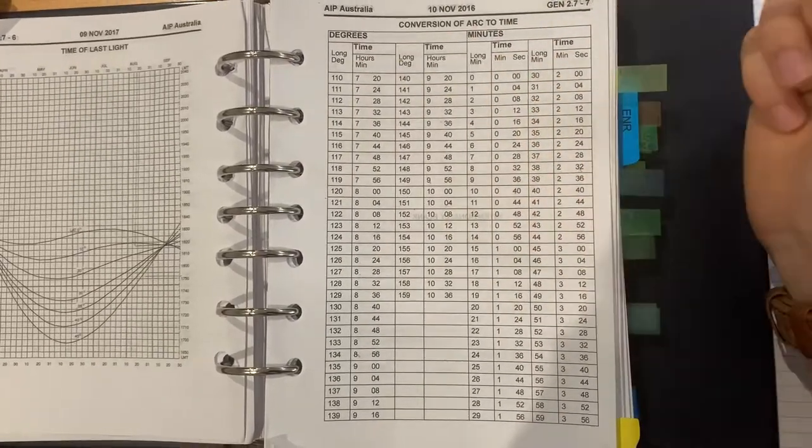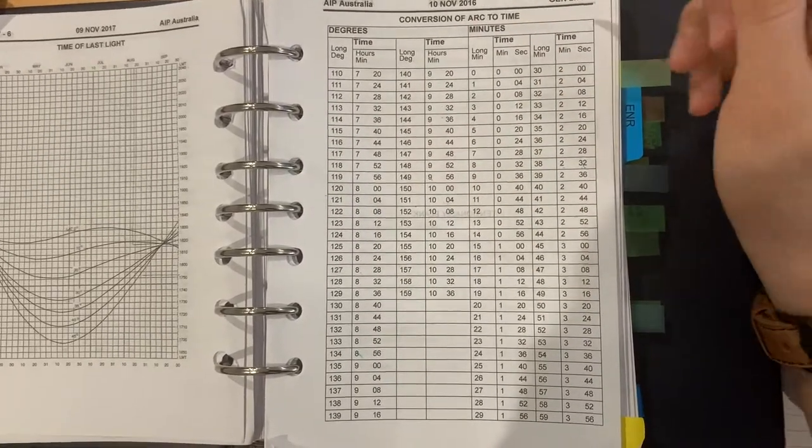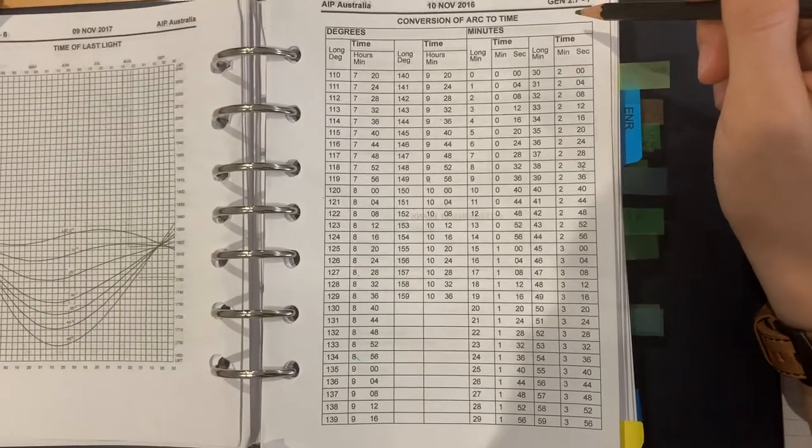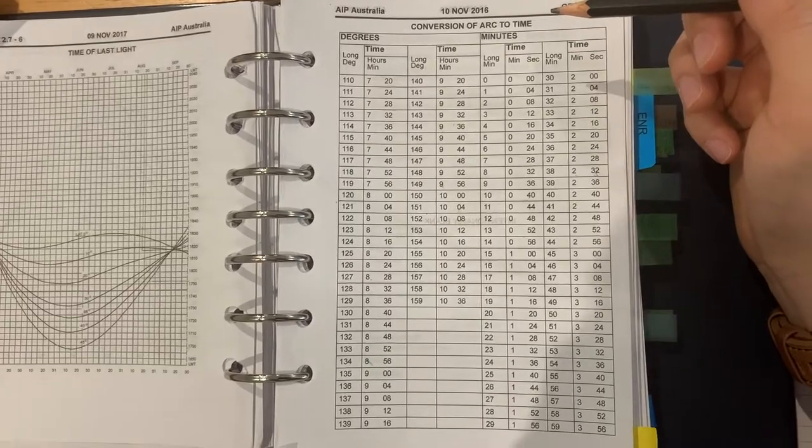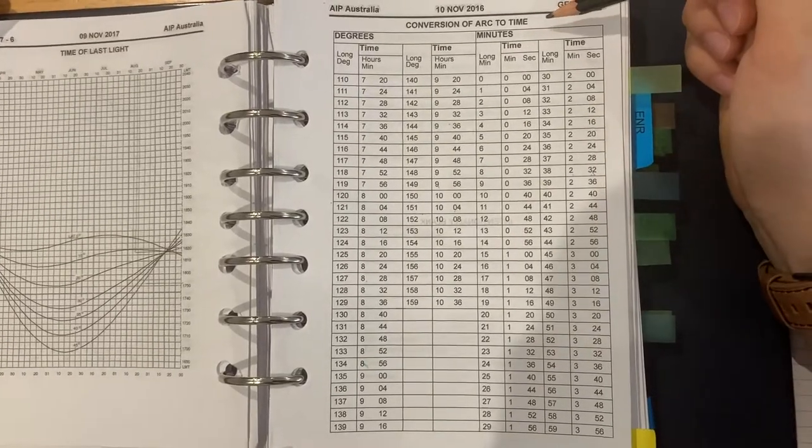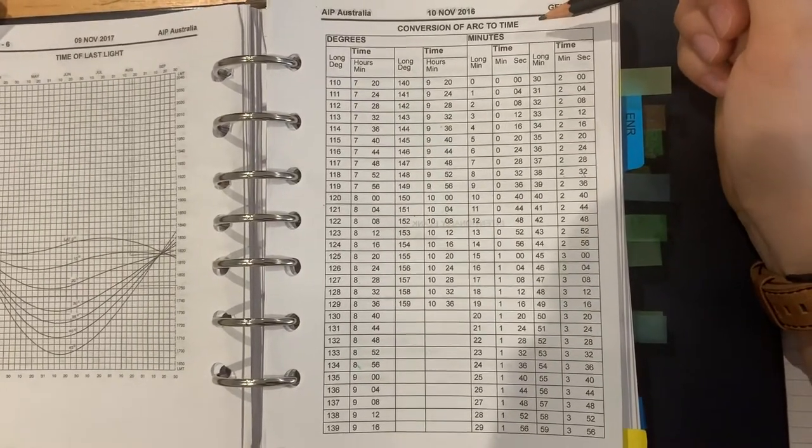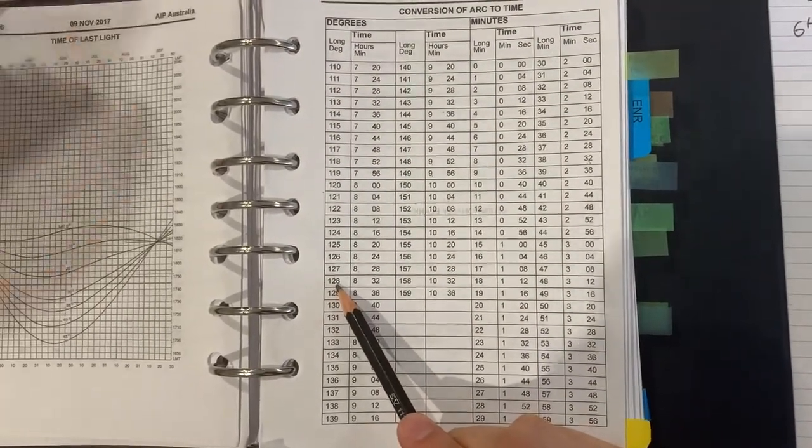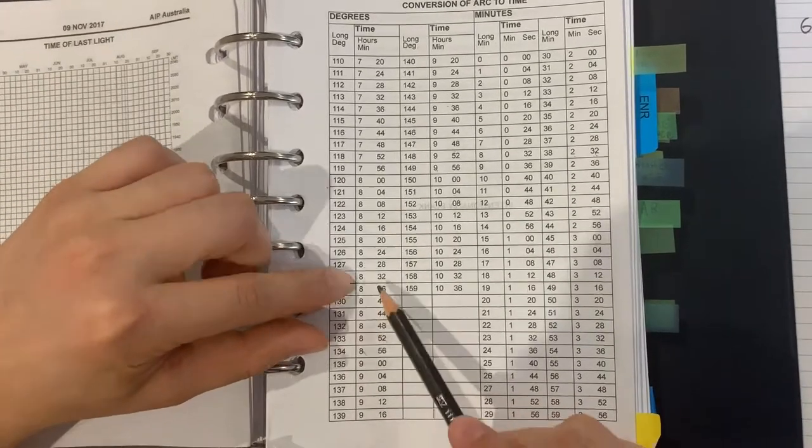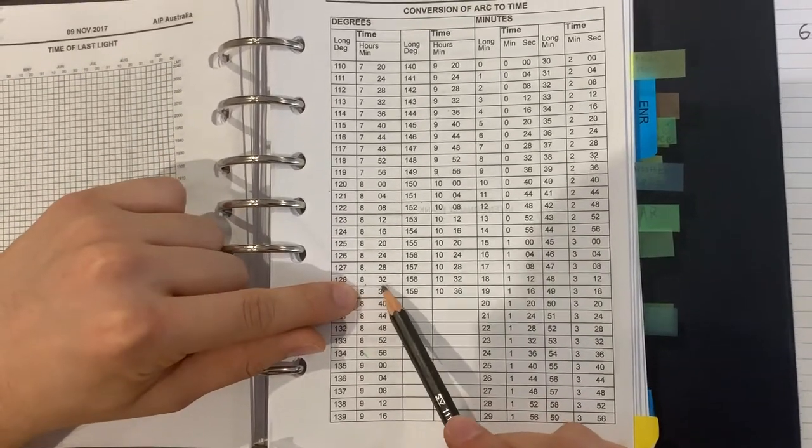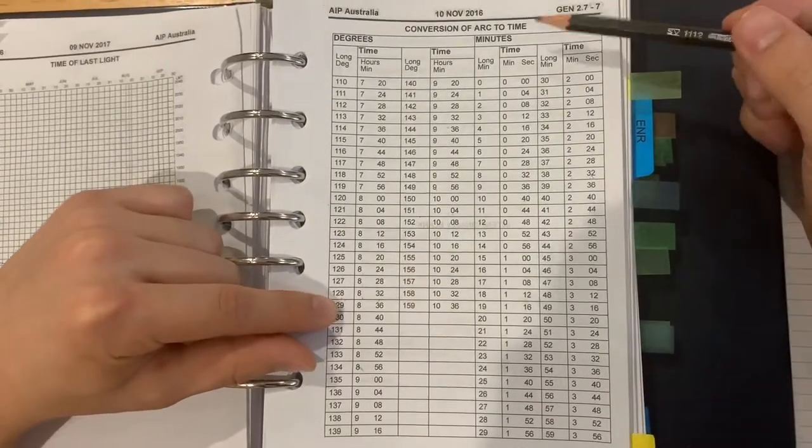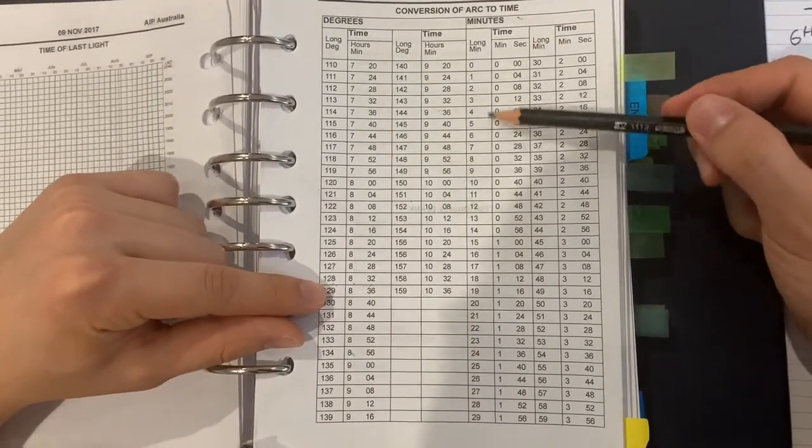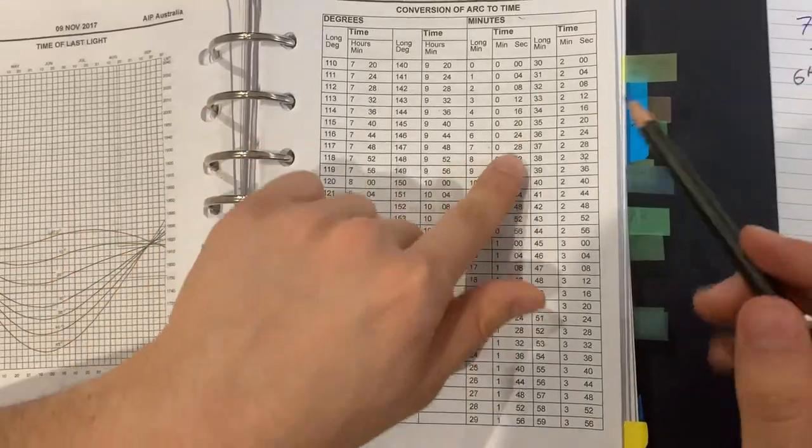From the conversion of arc to time table, which is located in the gen 2.7-7, we need to find time in hours and minutes. So we can see here that we are in the conversion of arc to time. We go down to 128 degrees, which gives us 8 hours and 32 minutes. Then we go down to the minutes column and we find 7 minutes, which is 28 seconds.